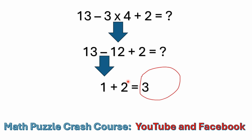All right, this one's fairly easy. If you remember your order of operations, you'll remember that you do the multiplication before addition or subtraction. So the first step would be the multiplication: 3 times 4 is 12. Then you have 13 minus 12 plus 2 equals what? Well, 13 minus 12 is 1, and 1 plus 2 is 3.